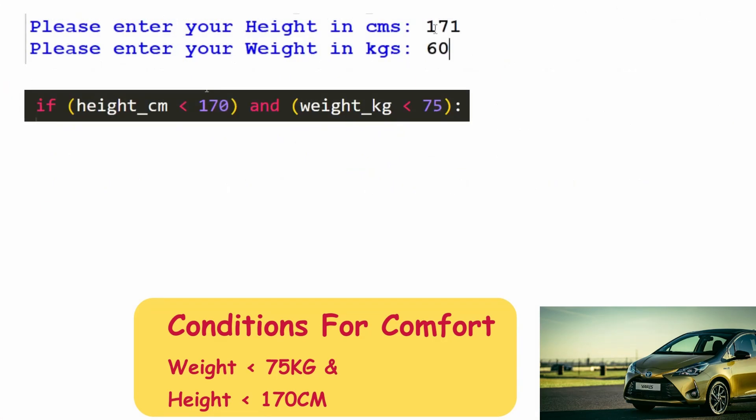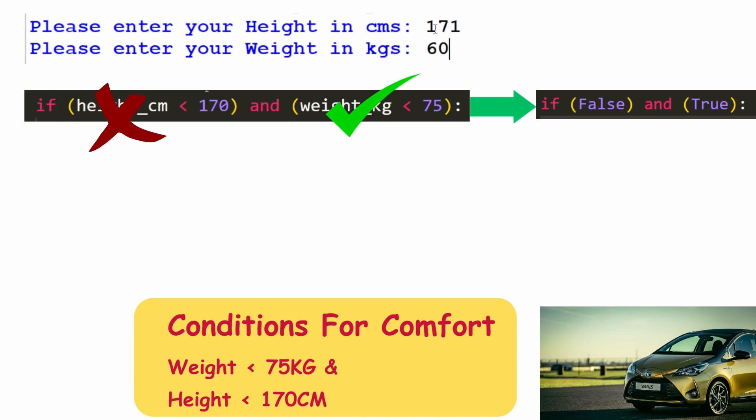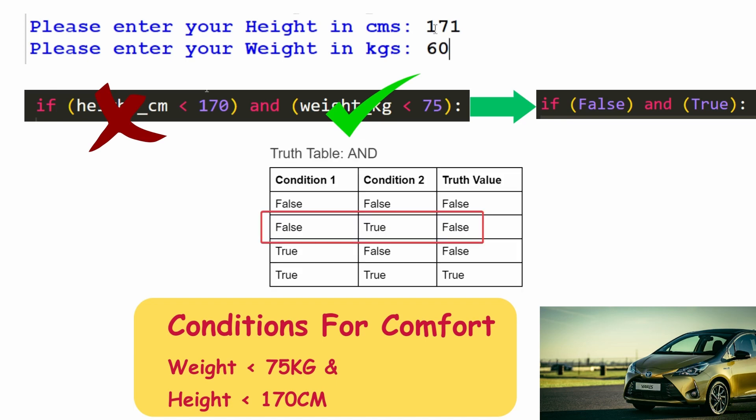So in the first case the condition height less than 170 failed and the condition weight less than 75 succeeded. So Python replaced condition 1 with false and condition 2 with true. As you might have learned in your boolean algebra class in high school, true and false is false.